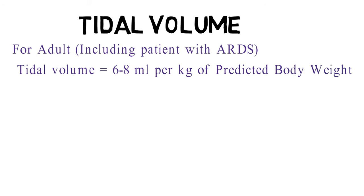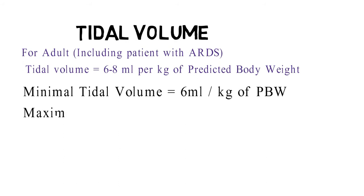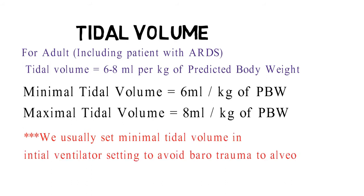Second is tidal volume. For adults including patients with ARDS, tidal volume is calculated as 6 to 8 ml per kg of the predicted body weight. Minimal tidal volume that can be set in ventilator for the patient is 6 ml per kg of the predicted body weight, and maximal tidal volume is 8 ml per kg. We usually set tidal volume at 6 ml per kg or minimal in the initial ventilator setting to avoid barotrauma to alveoli.